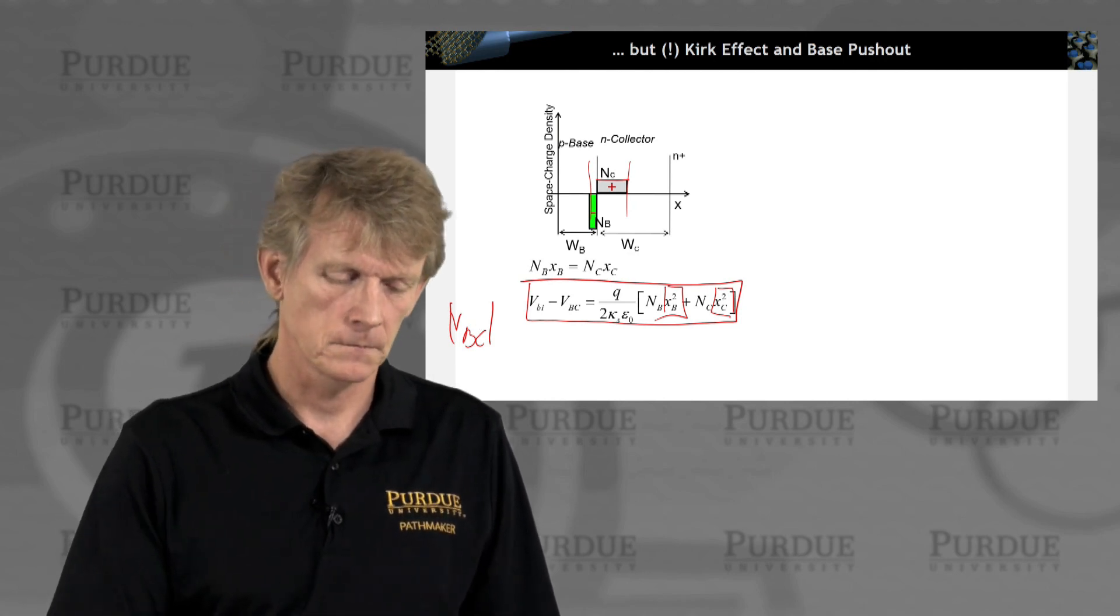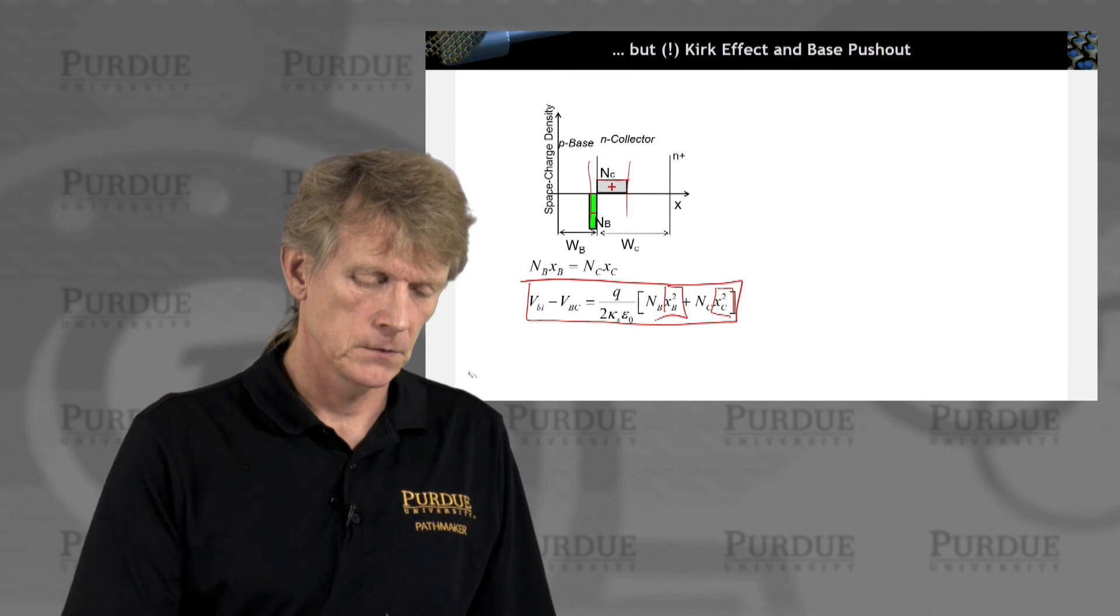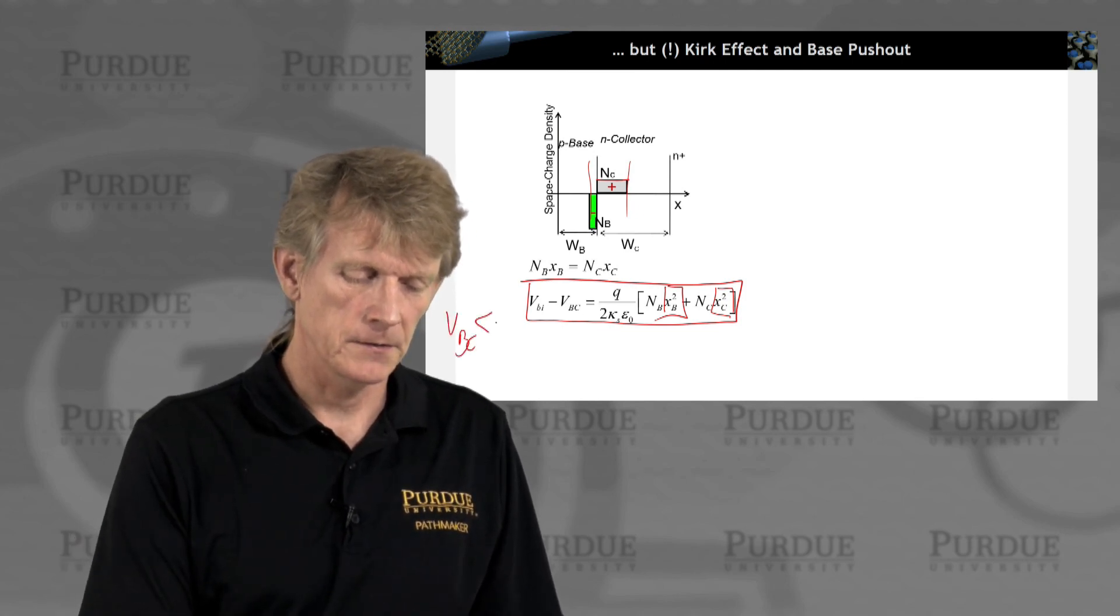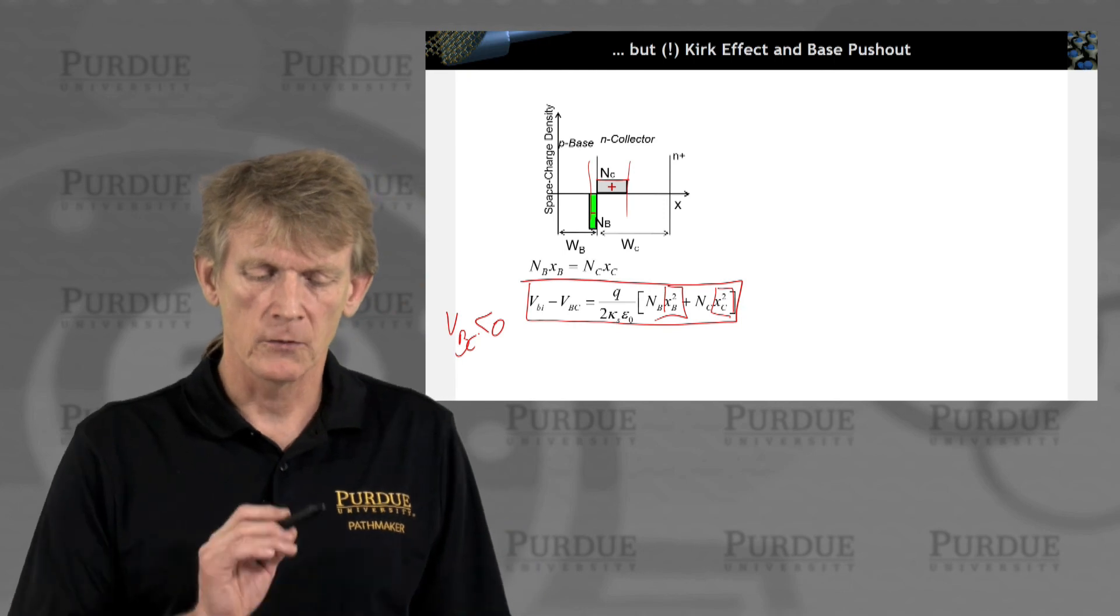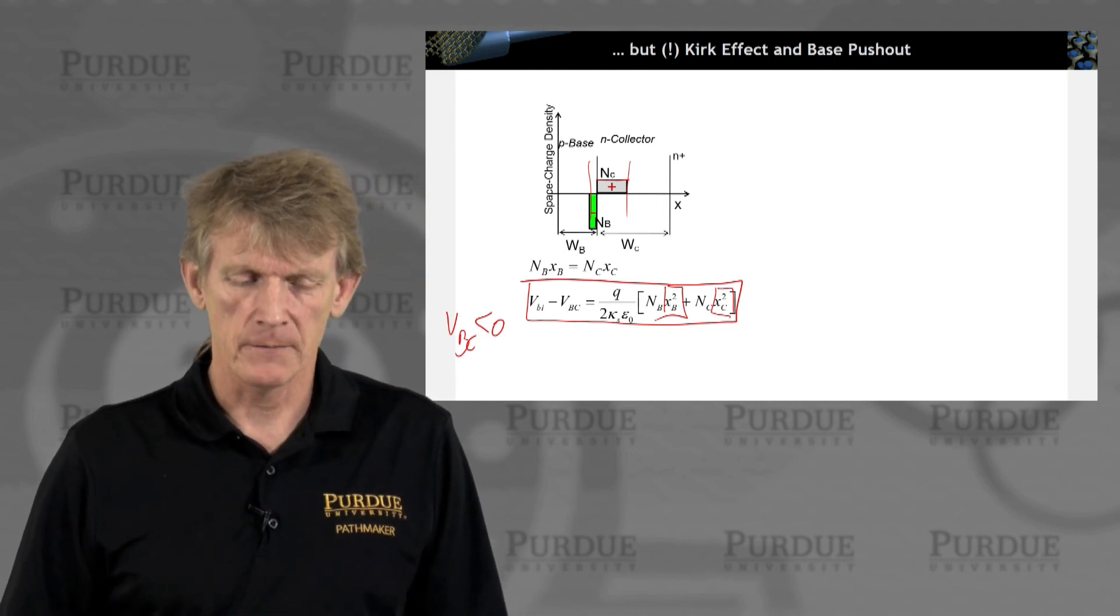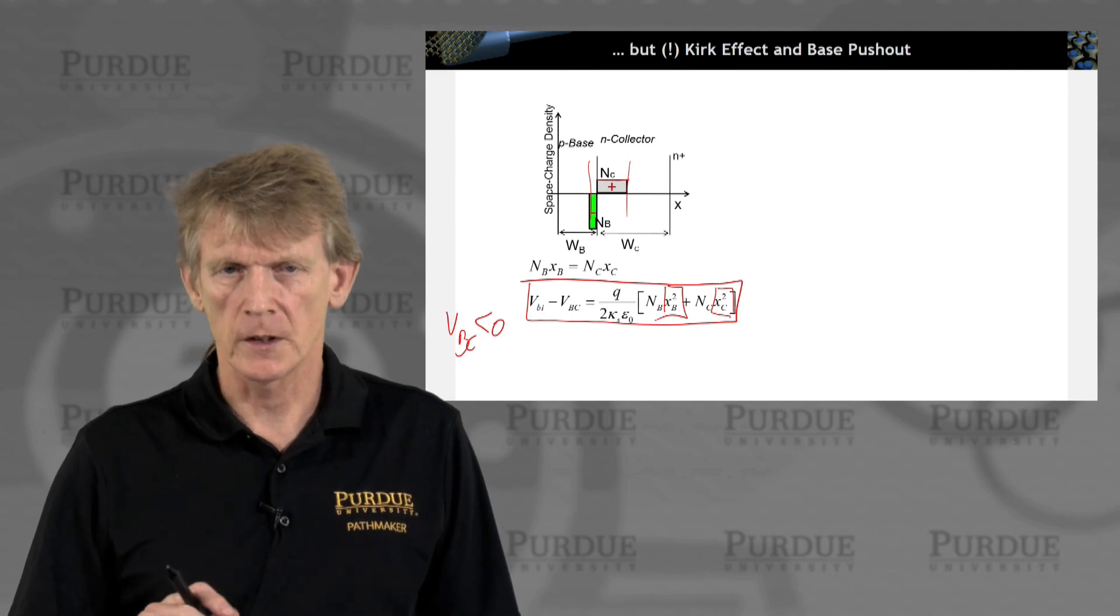VBC is a negative, so VBC is less than zero. So we're ramping up these depletion regions. So far, so good.